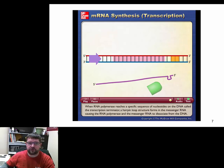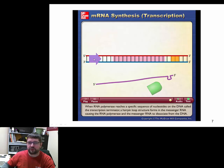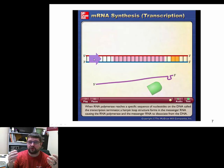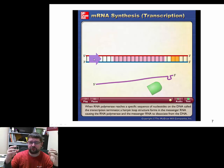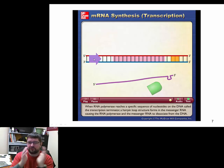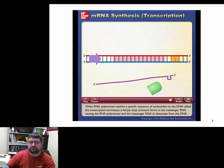That promoter region — depending on the group of organisms — is often a region called the TATA box, a TATA repeat. That is the region at which the sigma factor can associate, a gene follows, and it starts to copy that region.